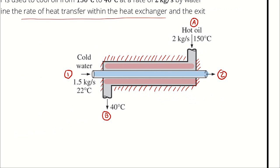To determine the change in enthalpy, we have a couple of options. The best would be to look up enthalpies in property tables. To do that, we would need property tables for oil — which we don't have. We do have property tables for water, but we don't have two independent intensive properties; we only know the temperature of the water, which is 22 degrees Celsius at the inlet.